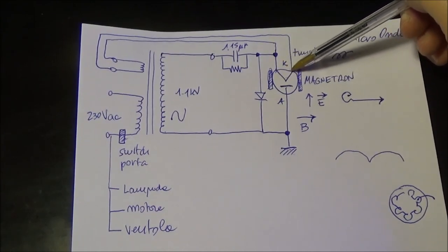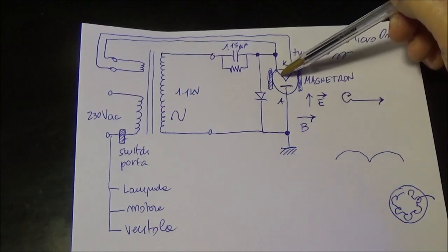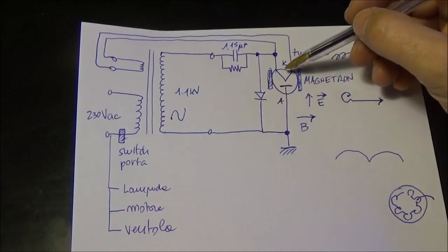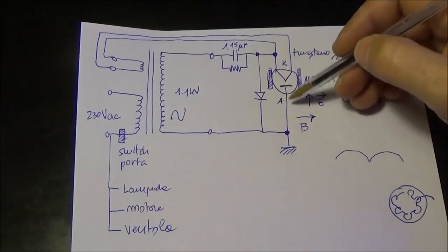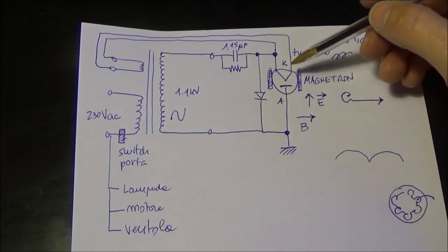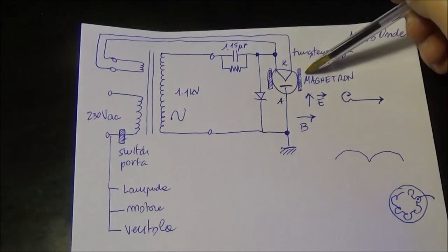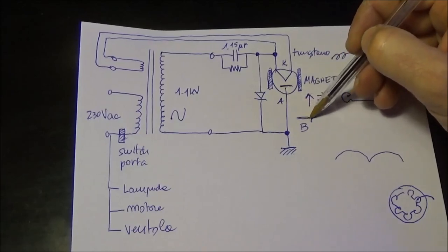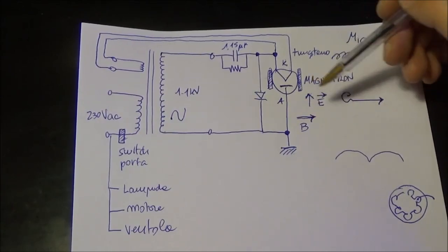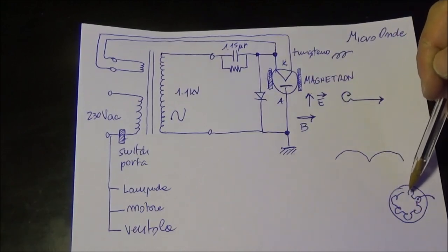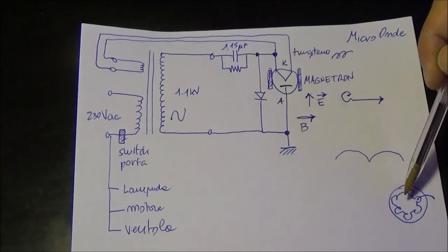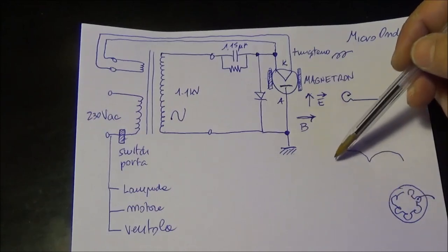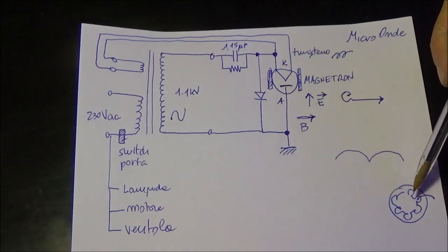Then we have the two permanent magnets on the sides that produce a magnetic field. The magnetic field and the electric field are 90 degrees between each other, and then the electrons when flowing into the magnetic field will be accelerated. The path of the electrons is no more a straight path but is a circular one, that is a cycloid.